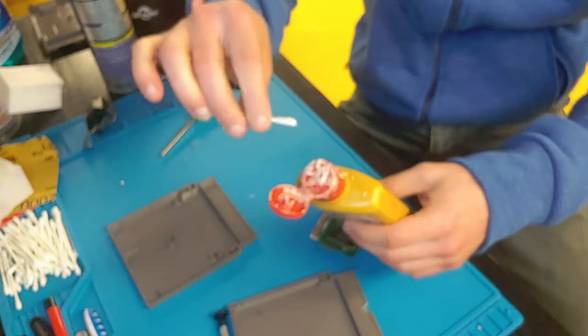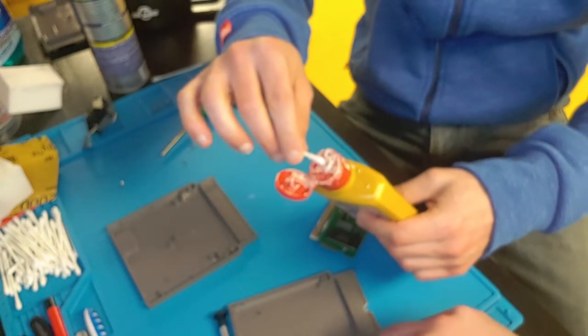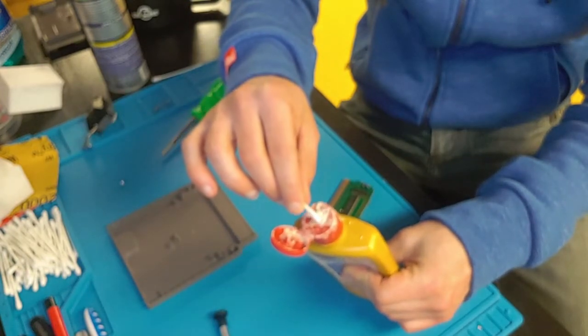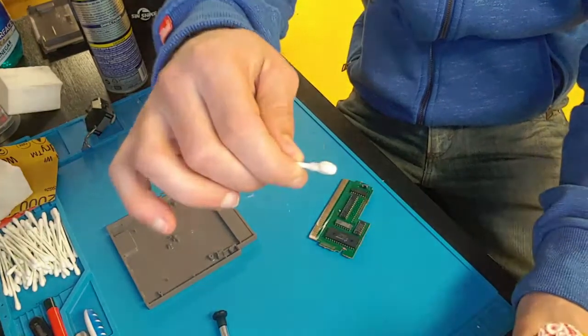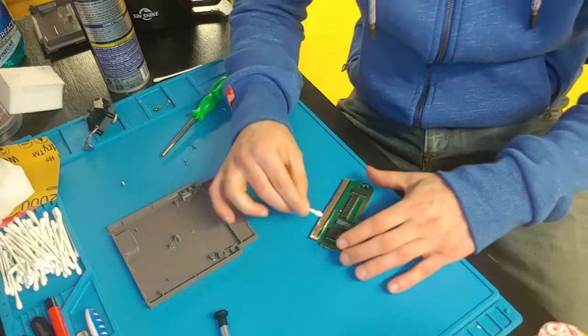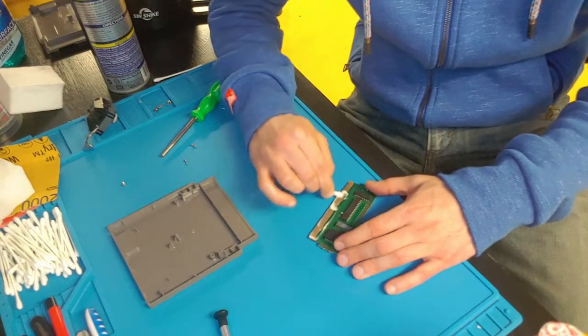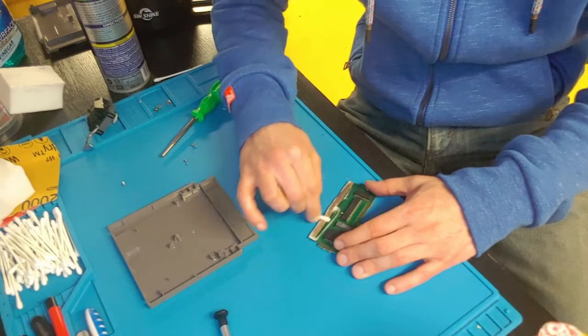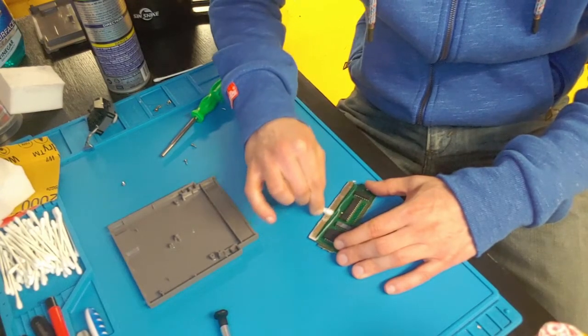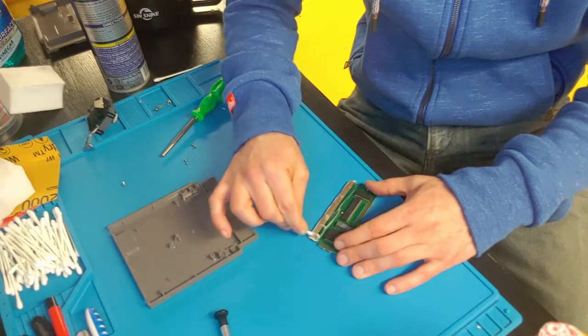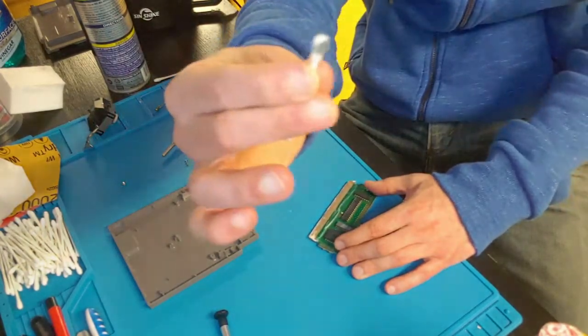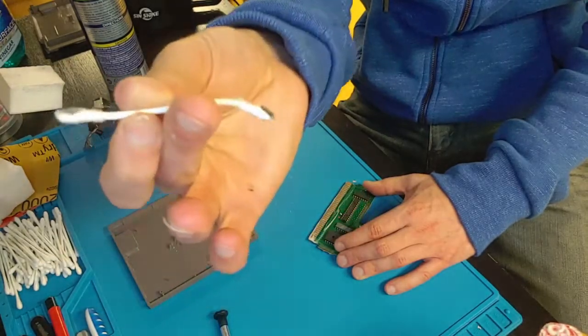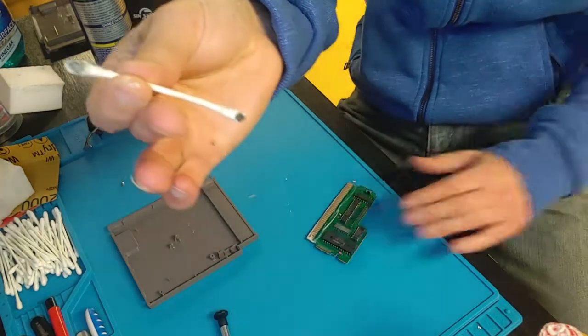Continue to apply it across all of the contacts. In most cases, you'll probably need a little bit more Brasso. Same small amount and get the second half of the pins on the board here. You can see on your Q-tip all of the dirt that's being removed from the pins. It's all coming right off.